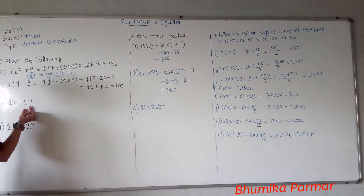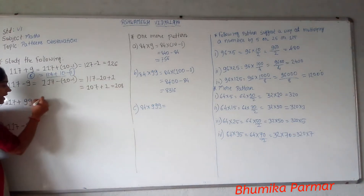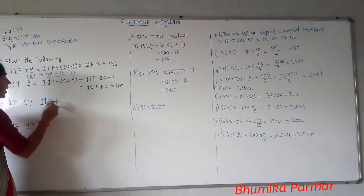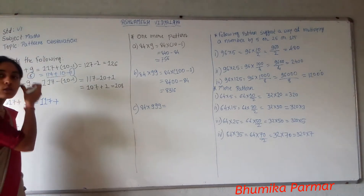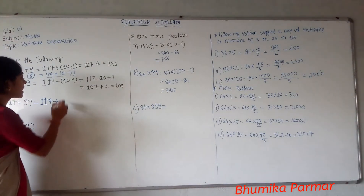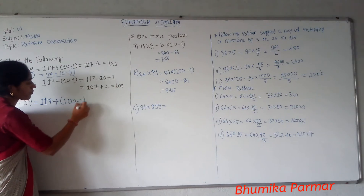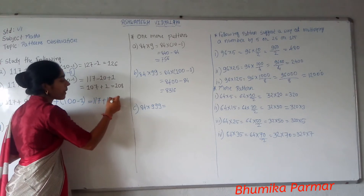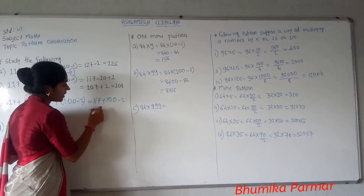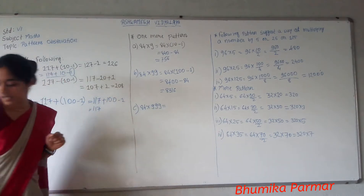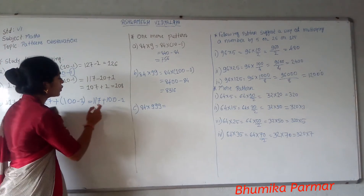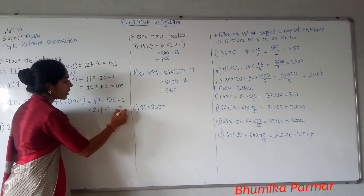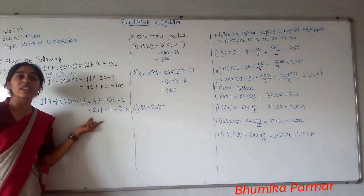Now we can do the same for 99. We write 99 as 100 minus 1. So for example, 270 minus 99: we write it as 270 minus 100 plus 1, which gives 270 minus 100 equals 170, plus 1 equals 171. Wait — this gives 171. These are easy calculations using 10 and 100.